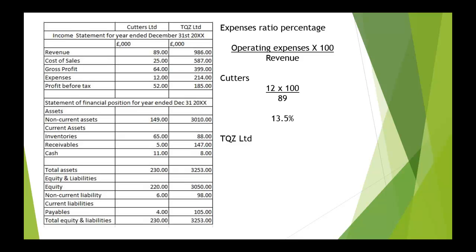And for TQZ Limited, the operating expenses are 214, multiplied by 100, divided by the revenue of 986, and we get 21.7%.